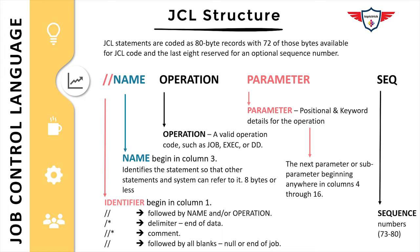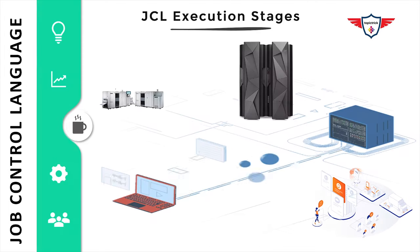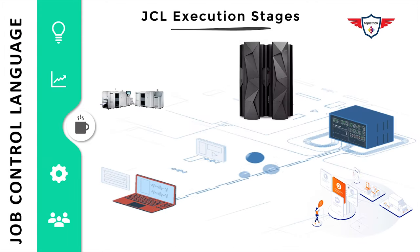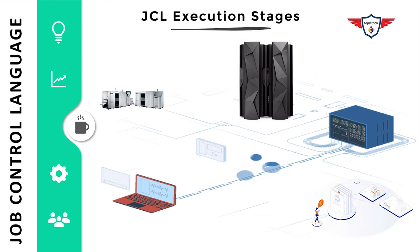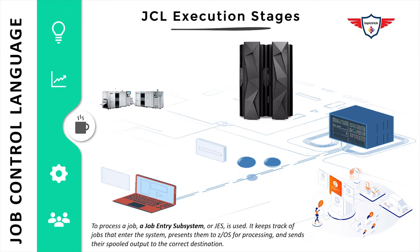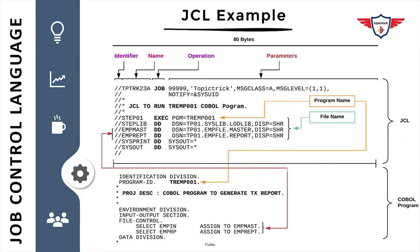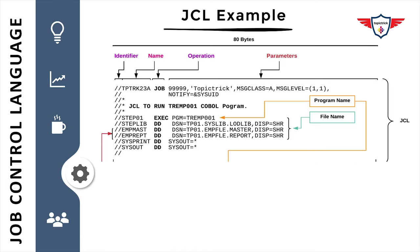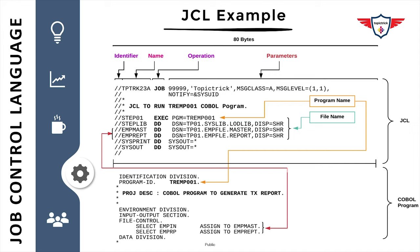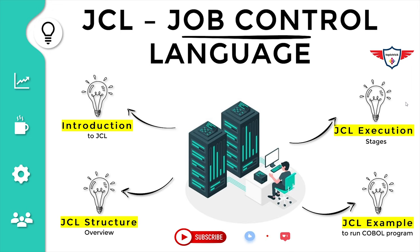The third section is JCL execution stages, where I'm going to explain the different stages or lifecycle of a JCL, starting from submitting a JCL till you get your output. The last section is JCL example, where I'm going to explain how you can execute a COBOL program with the help of a JCL. So the last section is primarily a COBOL JCL tutorial.